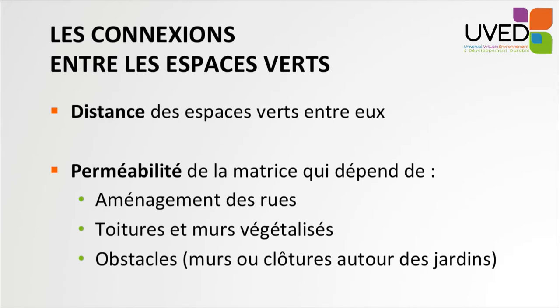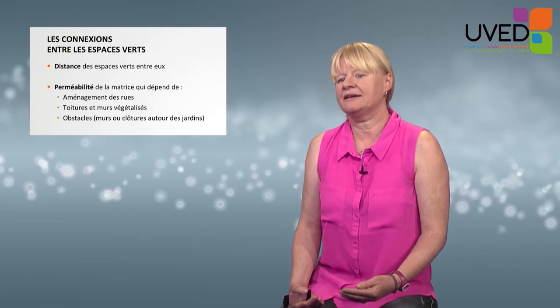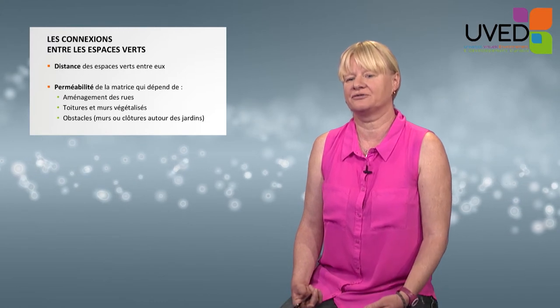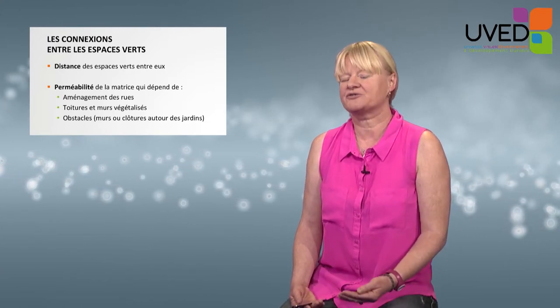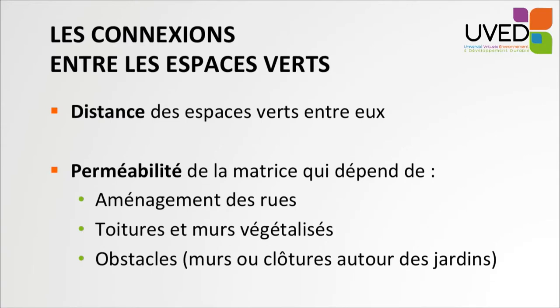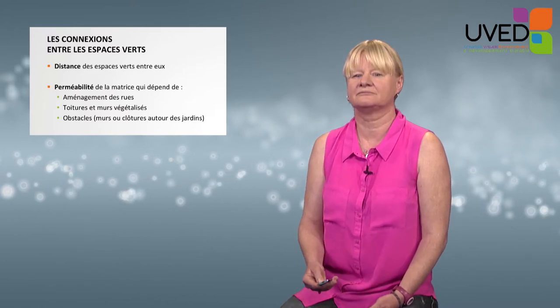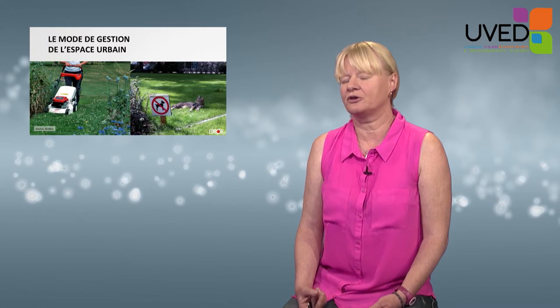Finally, connections between green spaces influence the quality of biodiversity. In a town, the distance between gardens and green spaces must not be too long so that they can exchange species and animals. Permeability of the area around green spaces and gardens must also be sufficient for species to travel. Streets must be organized in a given way — there must be green walls and green roofs and as few obstacles as possible. Hedges, walls, and fences around gardens should be avoided.